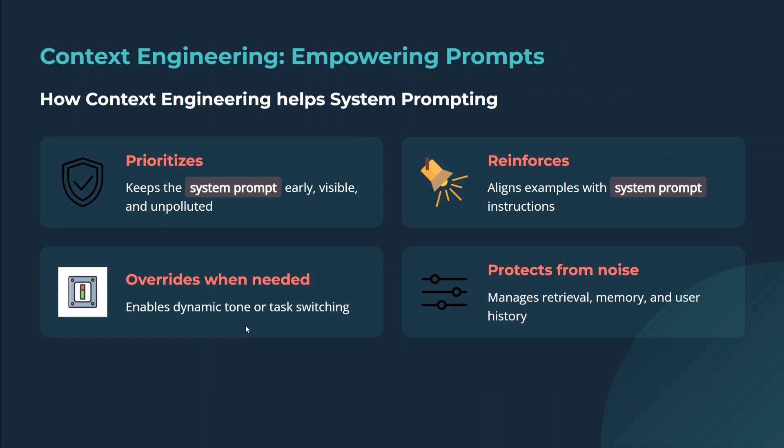Context engineering empowers prompts. How does context engineering help system prompting? It prioritizes system prompting — keeps the system prompt early, visible, and unpolluted. It aligns examples with system instructions, enables dynamic tone on task switching, manages retrieval, memory, and user history. It protects system prompting from noise. The core idea is that the instructions you provide in the system prompt don't get overridden. When you are mentioning 20 instructions, it is the role of context engineering to make sure that system prompting doesn't get buried under other instructions.